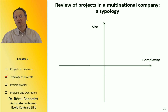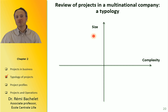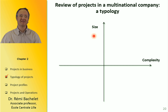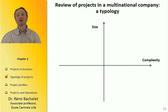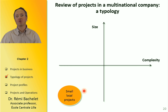Now let's get on to a typology of projects. What I'm showing you is a measure of the complexity and the size of a project. How do you measure the size of a project? It's pretty easy: the bigger a project is, the more it costs. So this axis could represent the amount of resources consumed by the project, or simply the budget. Here you have low complexity and small size — we can talk about a small local project.